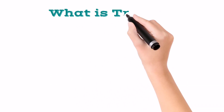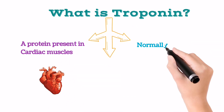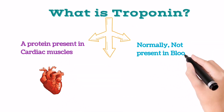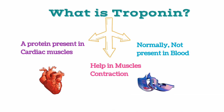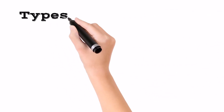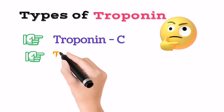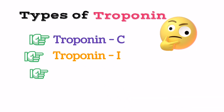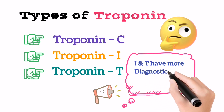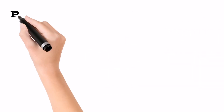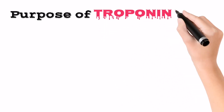First, we will know about troponin. Troponin is a protein present in cardiac muscles but is not normally present in blood. Troponin helps in contraction of the muscles. There are three types of troponin: troponin C, troponin T, and troponin I. For diagnostic purposes, troponin I and T are important.